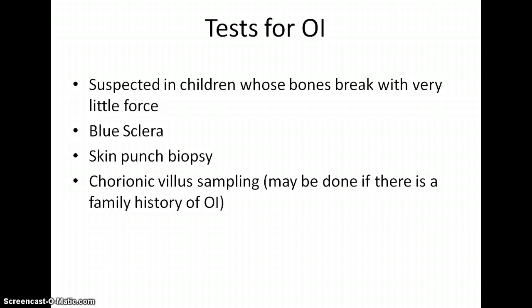There are a few diagnostic tests, but they don't perform them unless they're fairly sure the child has OI — for example, if their bones break easily or they have that really intense blue sclera. Then they might consider a skin punch biopsy, where they take a sample of skin and analyze it to see if the collagen is improperly formed. A chorionic villus sampling might also be done if there's a family history of OI, to find out if the child may have it before birth.